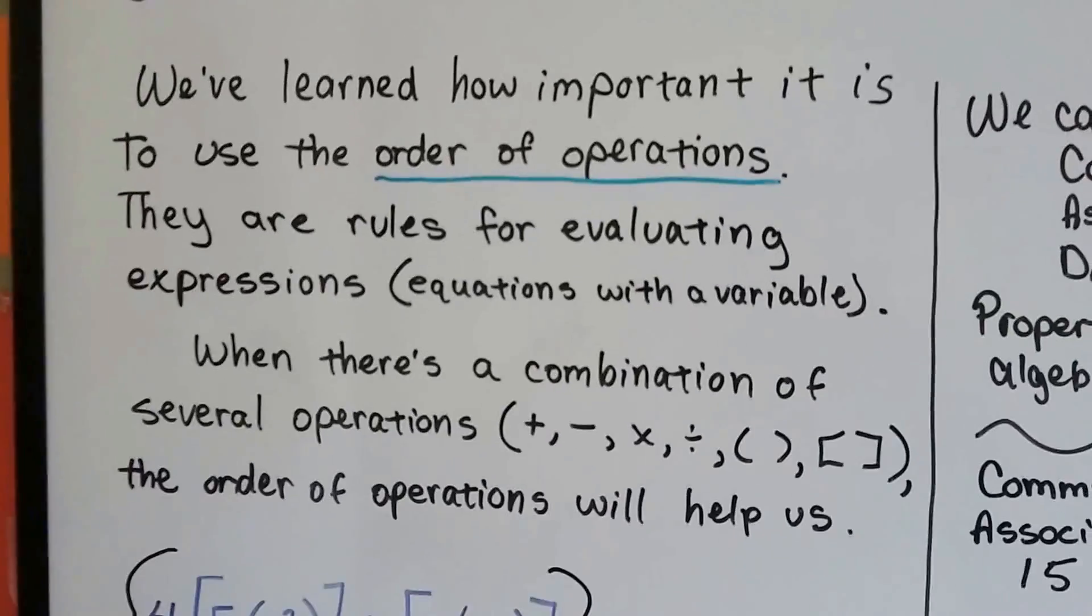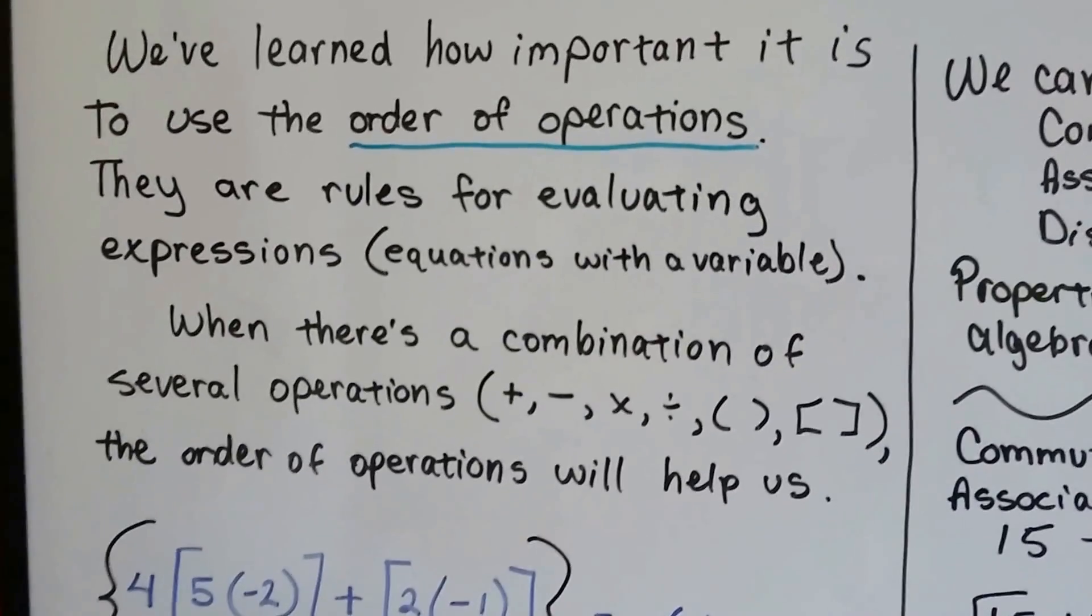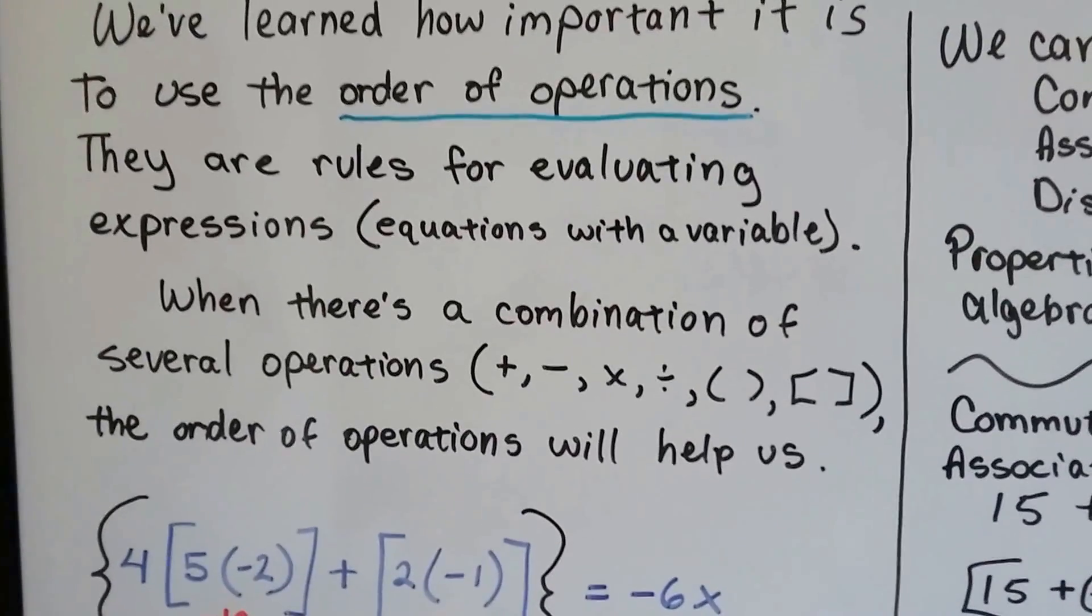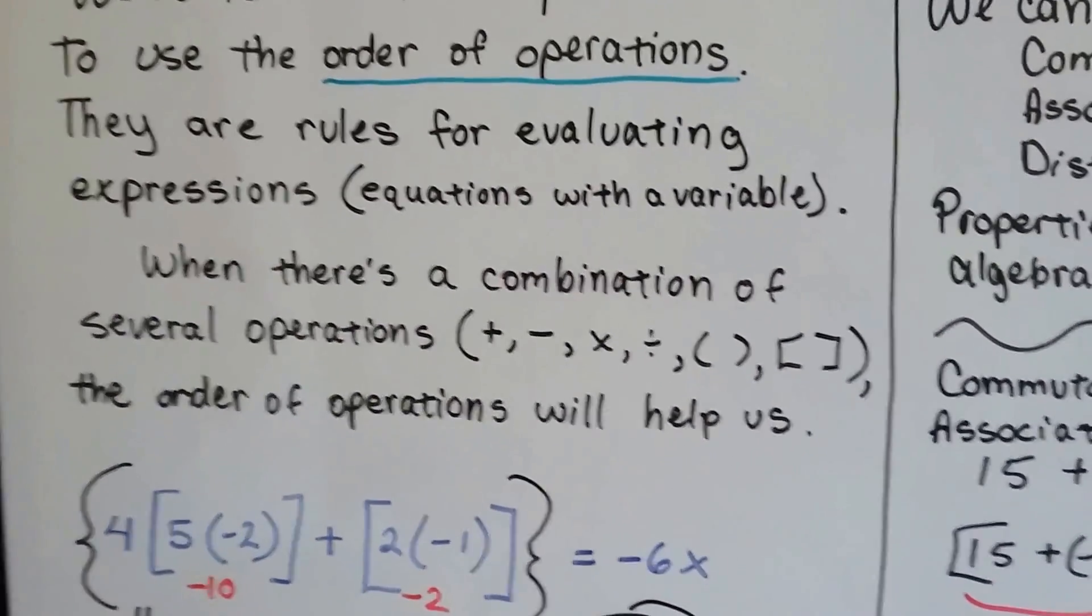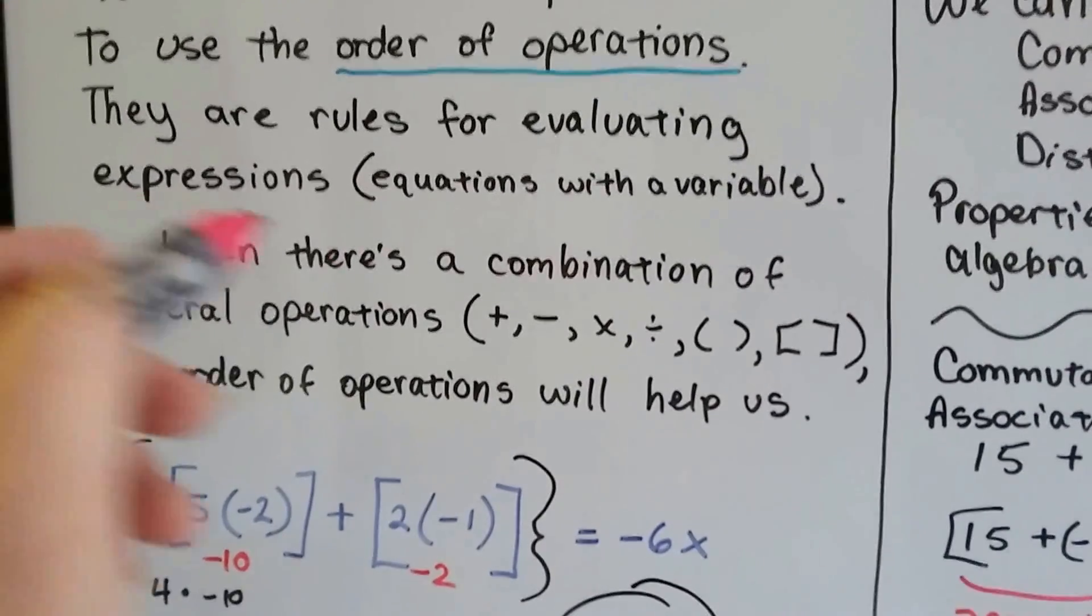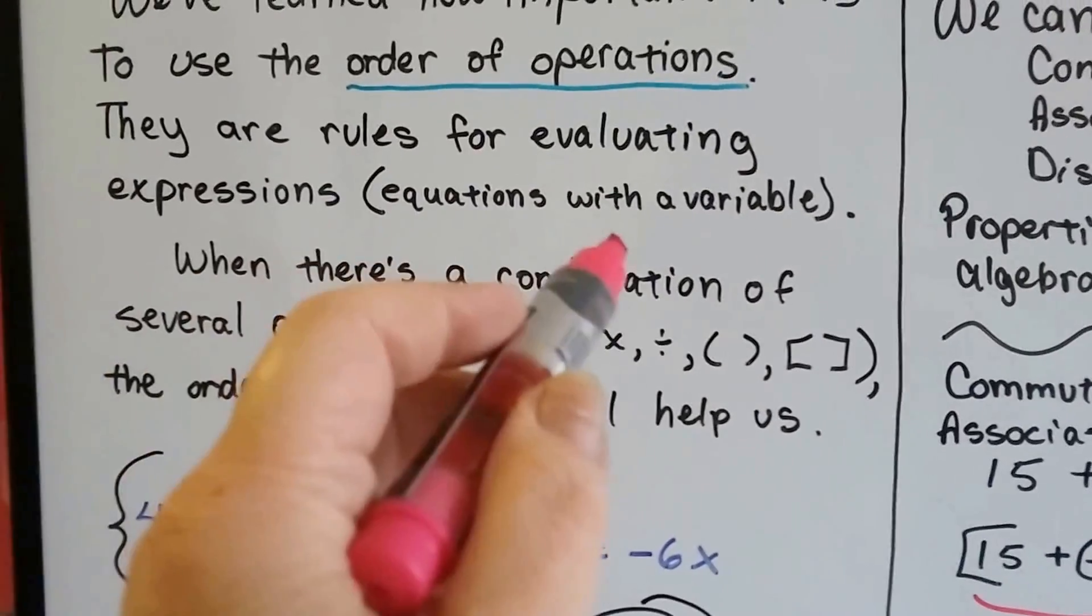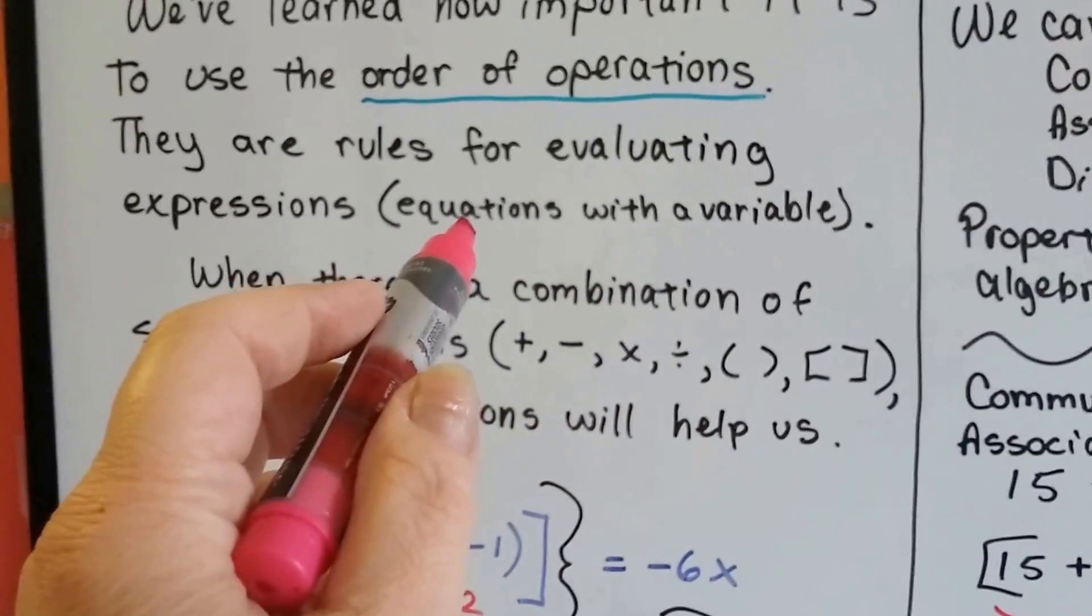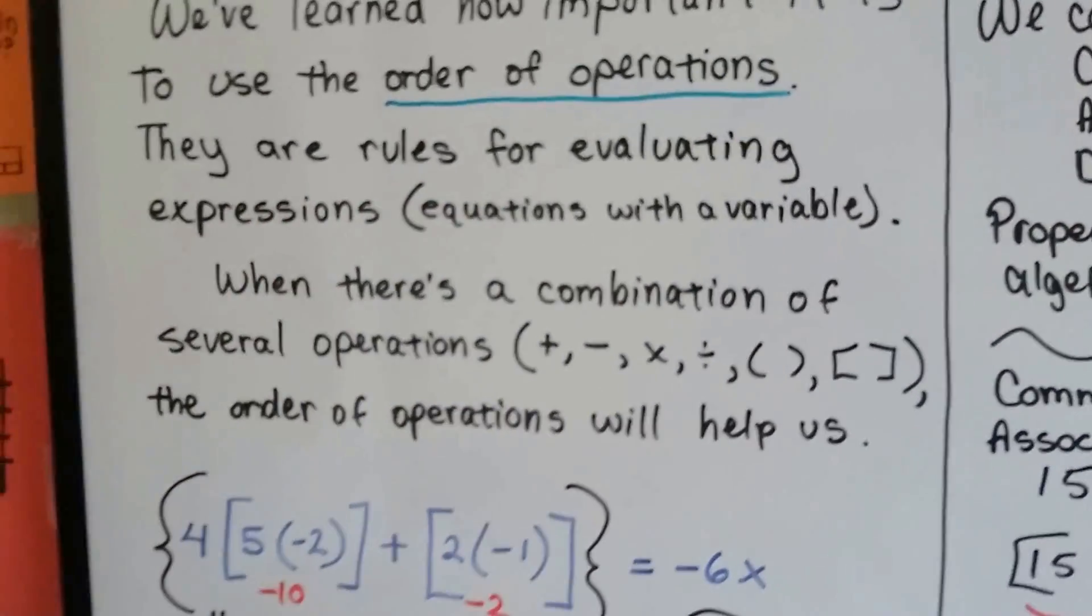As I said in the last video, we learned how important it is to use the order of operations. There's rules for evaluating expressions. Expressions are algebraic. They're like equations with a variable, except an equation has an equal sign. An expression doesn't.